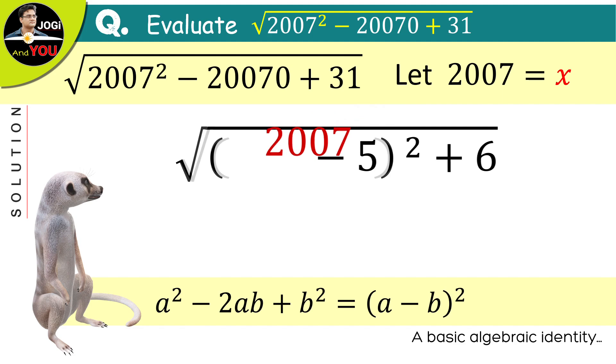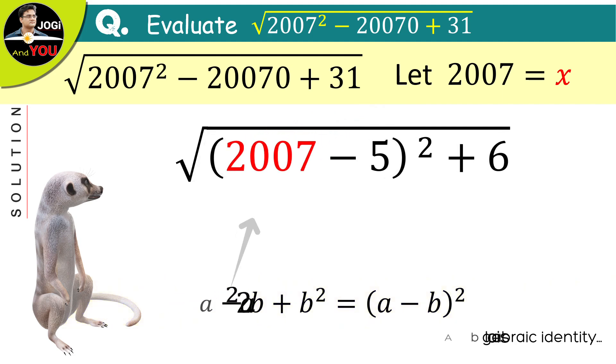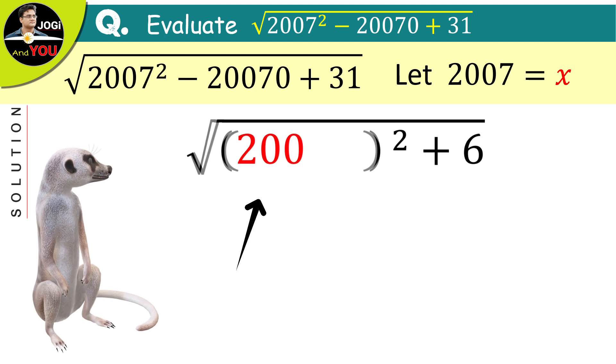And after doing that, here we will have 2007 minus 5 which would mean 2002.